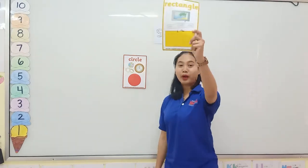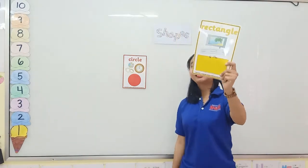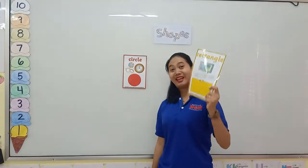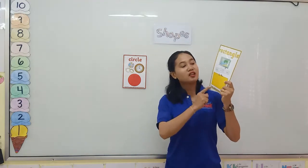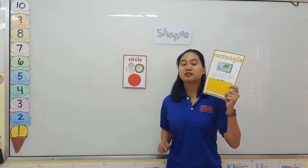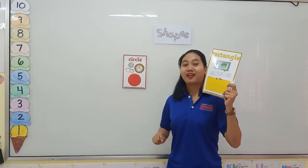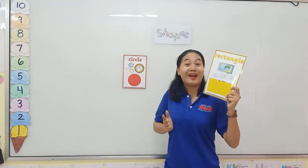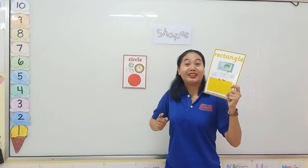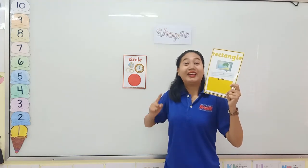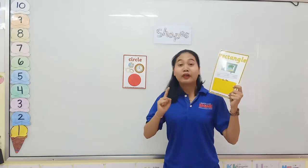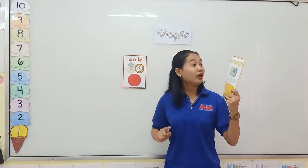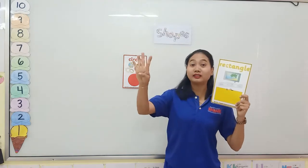One more. What shape is it? Great. It is a rectangle. Rectangle has four sides.